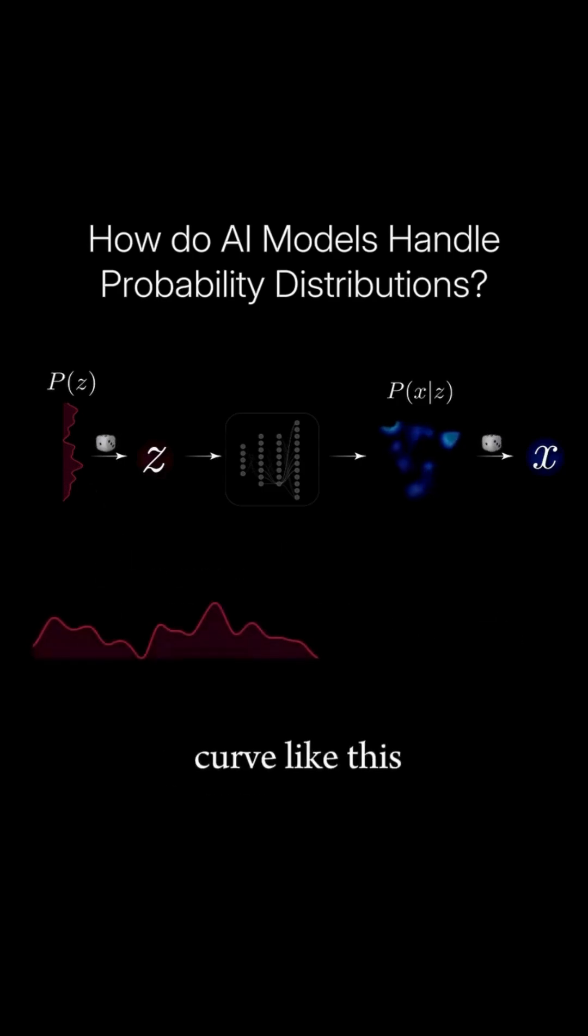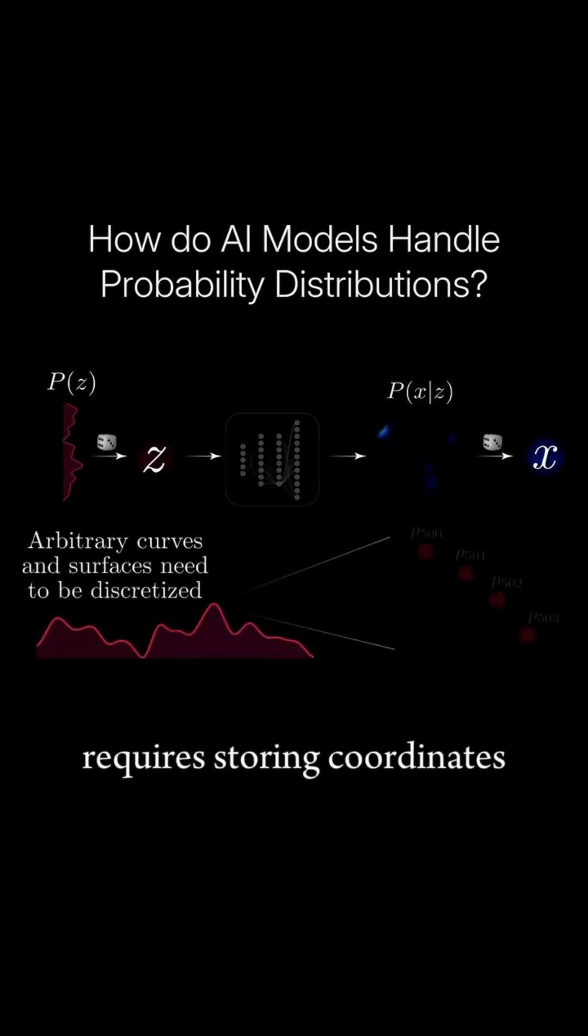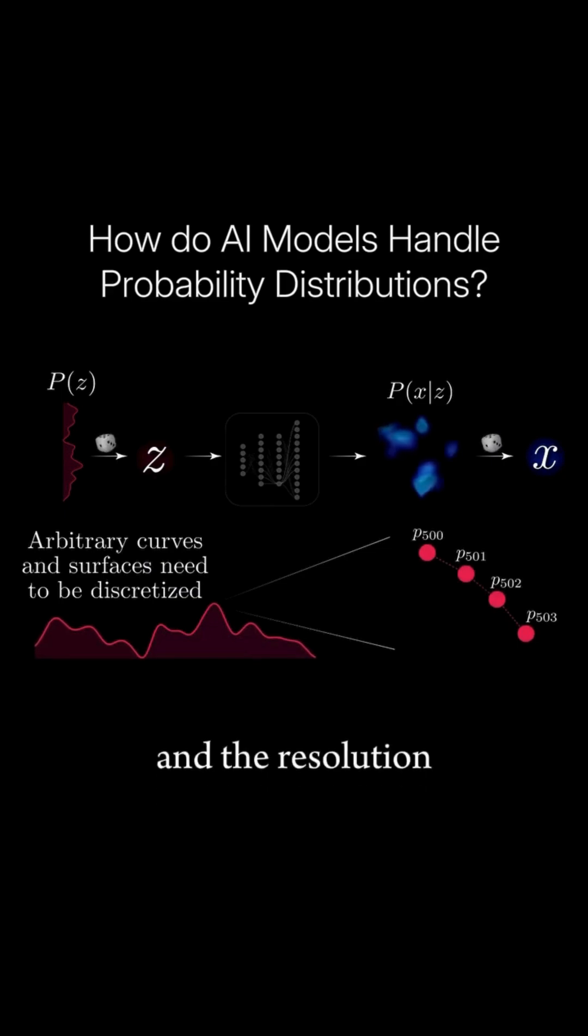Drawing a smooth curve like this requires storing coordinates of many points, and the resolution depends on how many points we use. But this quickly becomes impractical due to the sheer amount of information needed.